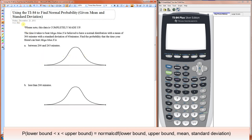We're going to talk about using the TI-84 to find normal probabilities. Here we have the example: the time it takes to beat Mega Man X is believed to have a normal distribution with a mean of 300 minutes and a standard deviation of 45 minutes. Find the probability that the time your friend can beat Mega Man X is between 200 and 245 minutes.